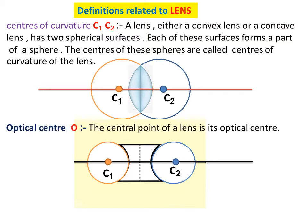The next definition is optical center. The central point of a lens is its optical center. For a convex lens, this central point is its optical center, and similarly for a concave lens. It is usually represented by the letter O.